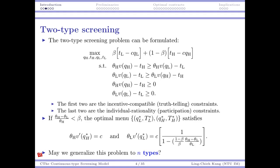We can solve this problem, and under certain conditions the optimal menu satisfies efficiency at the top — for the high type the quantity is efficient — and downward distortion for the low type, where the quantity is distorted downwards. We also have monotonicity and no rent at the bottom. If you have forgotten these results, you probably need to do a brief review.